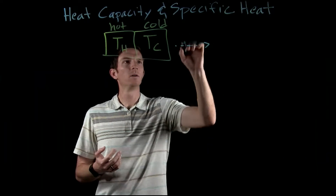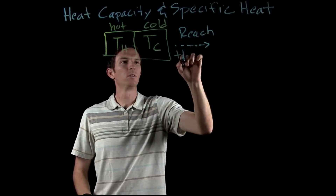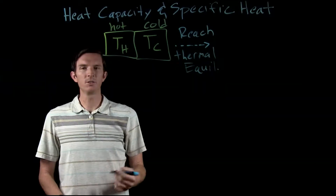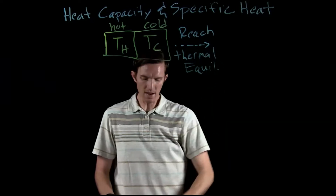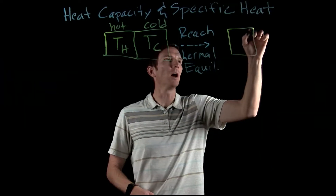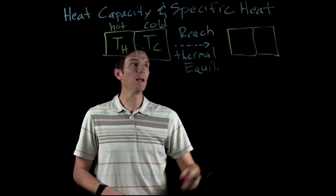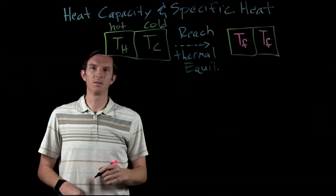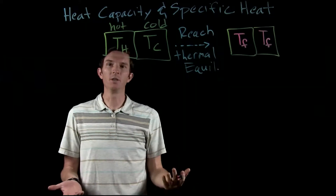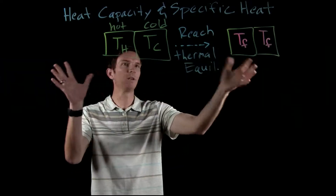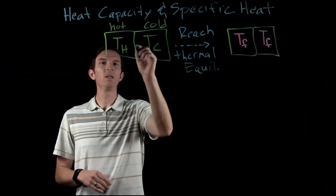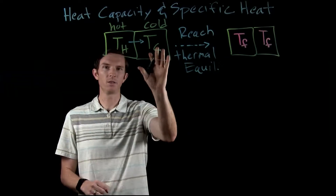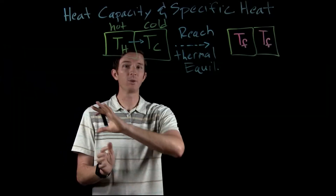After some time, they are going to reach what we call thermal equilibrium — a special way of saying they end up at the same temperature. So our two objects, one that was cold and one that was hot, now end up at the same temperature. Heat is transferred from the hot object to the cold object — from higher average kinetic energy to lower average kinetic energy.